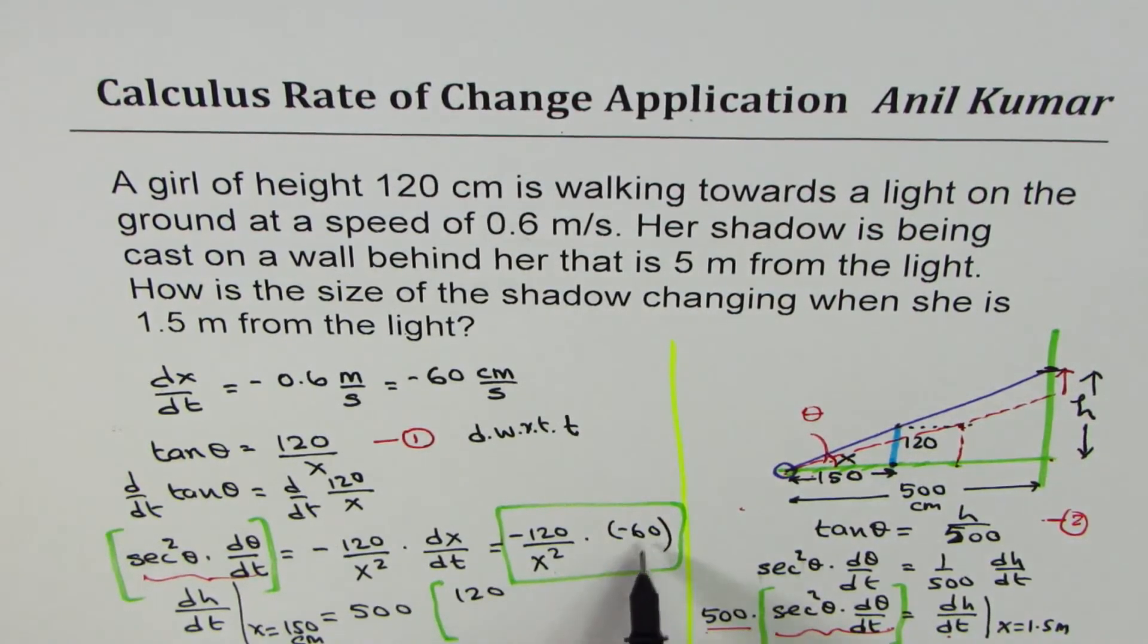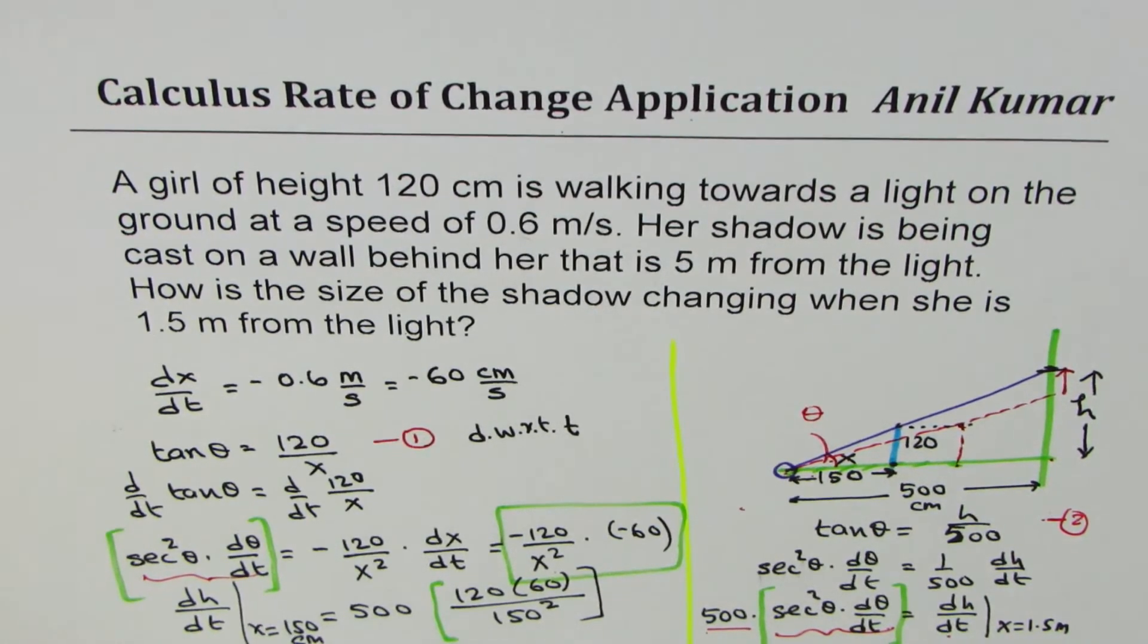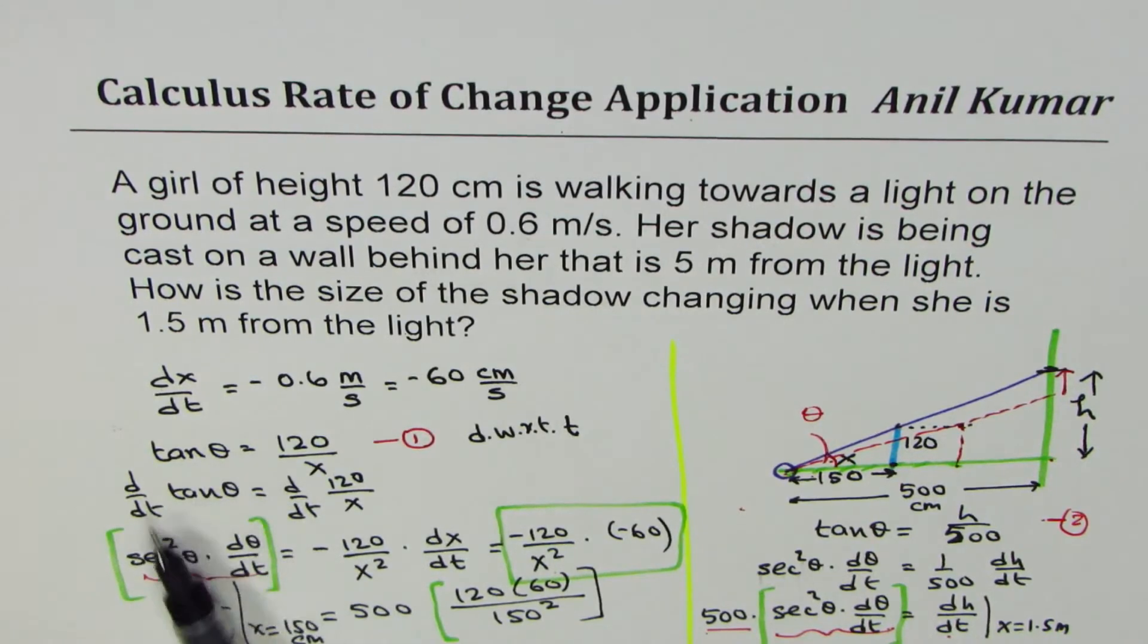So we have 120 times 60, minus minus became plus. And x is 150 for us. So I'll write this as 150 square. So that's our answer. You see that. So even if you don't know what is tan theta derivative, it doesn't make a difference. It cancels out.